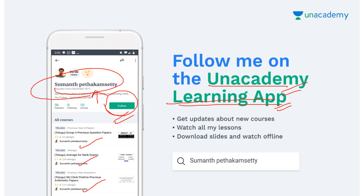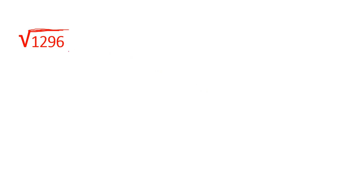So I will show you the questions from the shift. The first question is: square root of 1296. The answer is simple — the first number is 36.